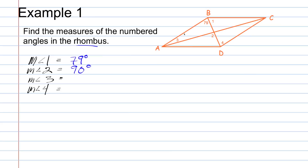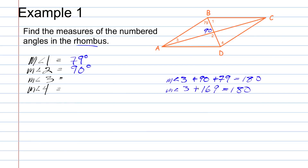The measure of angle 3 may not be so straightforward. Don't forget the triangle angle sum theorem: the measures of the angles of a triangle add up to 180 degrees. To calculate the measure of angle 3, we take the measure of angle 3 plus 90 plus 79, and that's going to equal 180 degrees. Adding 90 plus 79 gives us 169. So, measure of angle 3 plus 169 equals 180. Subtracting 169 from each side: 180 minus 169 is 11 degrees. The measure of angle 3 is equal to 11 degrees.